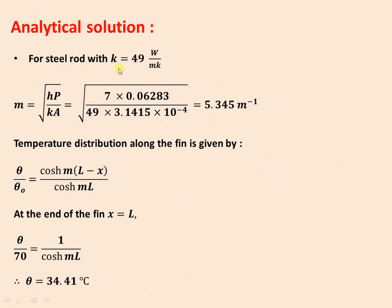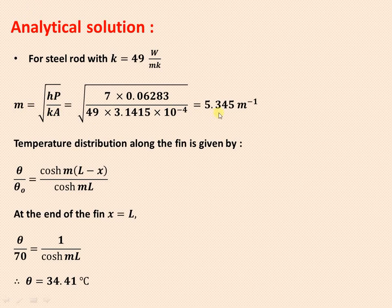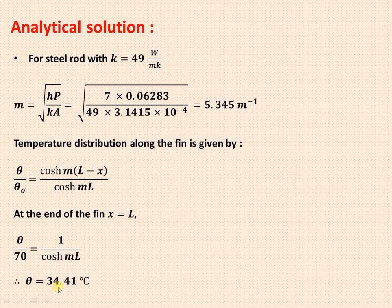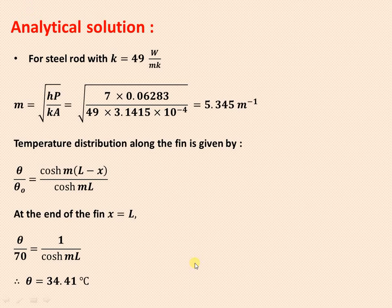Similarly, for the steel rod, the only different value is k = 49 W/m·K. Substituting those values gives m = 5.345 m⁻¹. Using θ/θ₀ = 1/cosh(mL), the temperature difference at the end of the fin is 34.41°C. We have to verify these values by plotting the temperature variation along the pin fin using the MATLAB code.